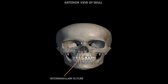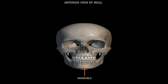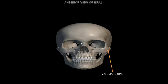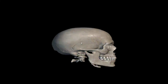The lower jaw bone — yeh akeli movable bone hai jo skull mein paei jati hai (this is the only movable bone found in the skull). It helps in chewing. Next is zygomatic bone, which is also called the cheek bone. They are two in number, on each side of the face.